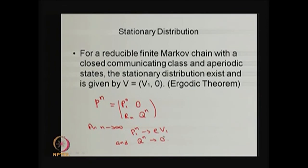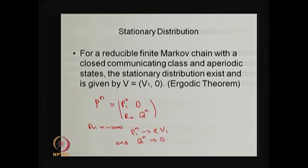As n tends to infinity, the matrix tends to a limit where E is the vector of ones multiplied by V1. Here V1 contains the stationary state probabilities for the states in the closed communicating class. The transient-to-transient n-step probabilities Q^n tend to 0 as n tends to infinity, because as n tends to infinity the system will not remain in a transient state. Therefore Q^n → 0 and the other block tends to the stationary state probabilities.